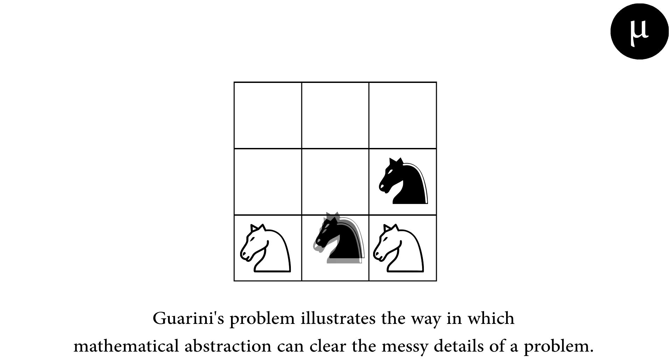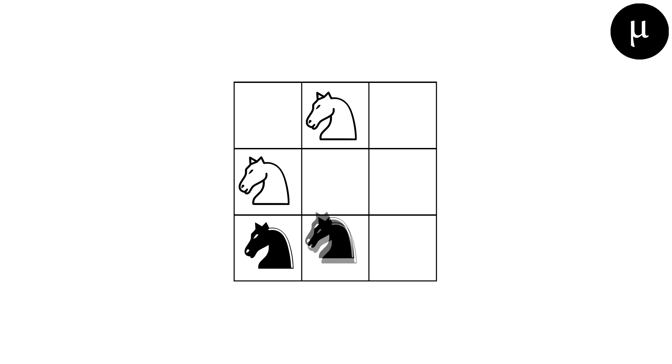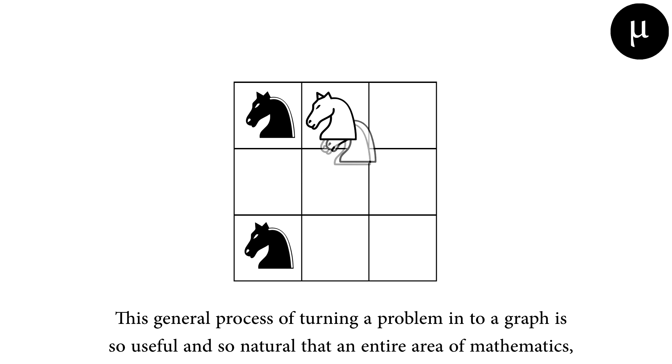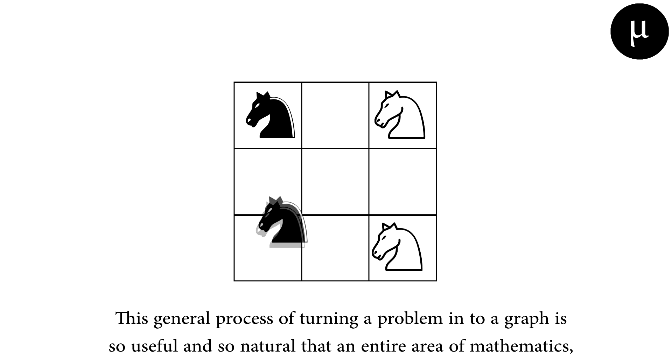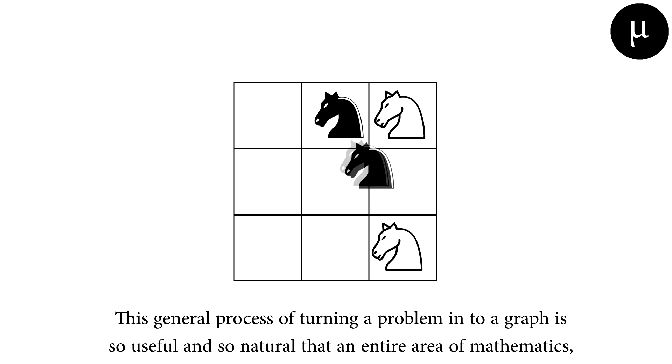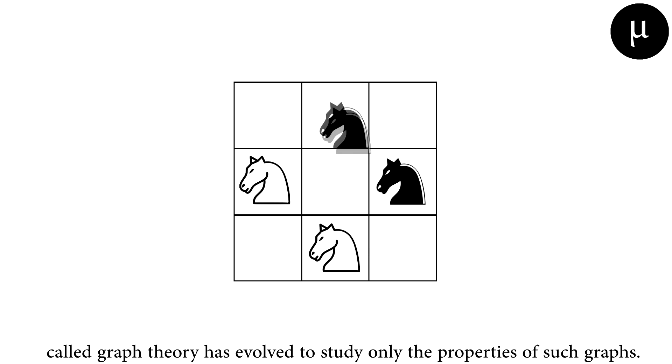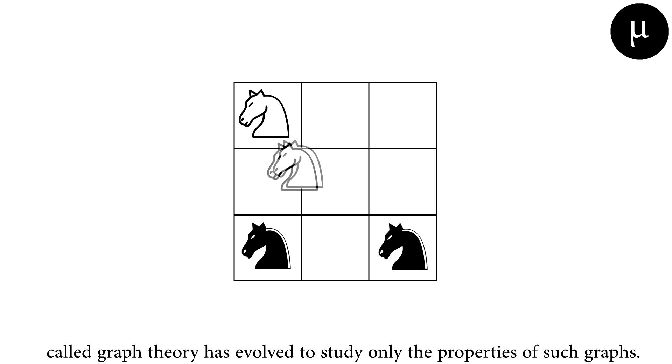Goverini's problem illustrates the way in which mathematical abstraction can clear the messy details of a problem. This general process of turning a problem into a graph is so useful and so natural that an entire area of mathematics called graph theory has evolved to study only the properties of such graphs.